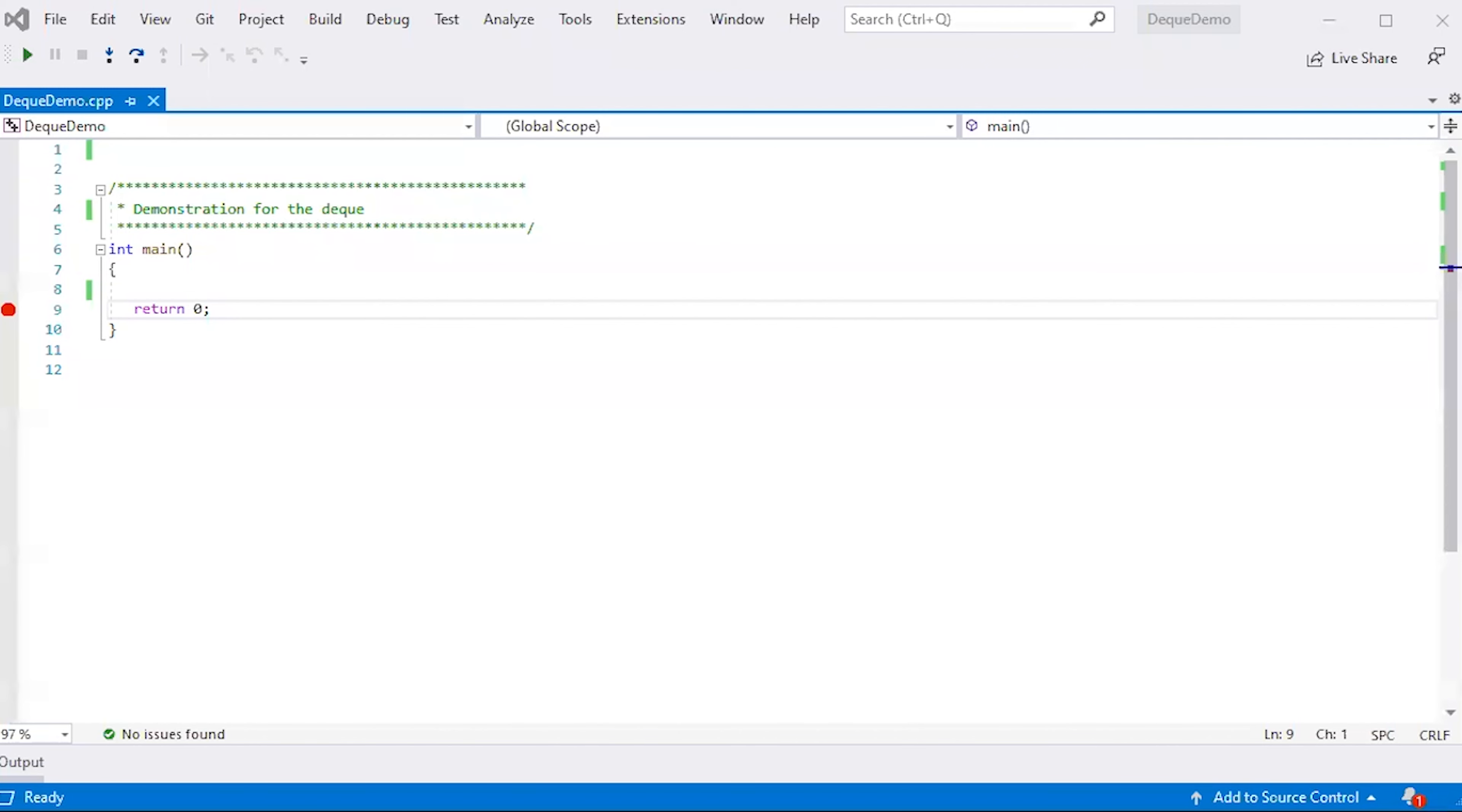Now let's verify we're correct on this. I'm going to say pound include deck, and that's how I use the deck from standard template library. I'll instantiate a deck object, a deck of integers. I'll say std::deck of int, call it d, and give it the values 10, 20, 30, 40.